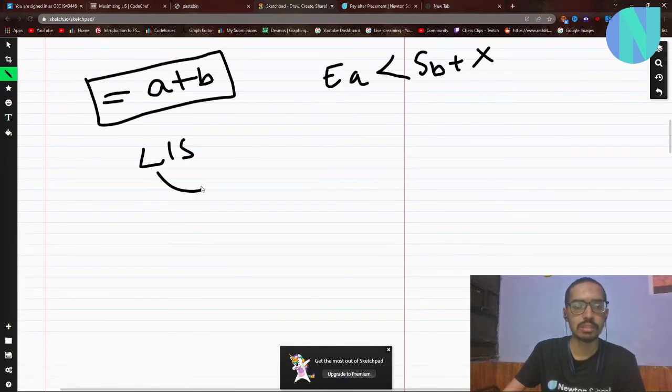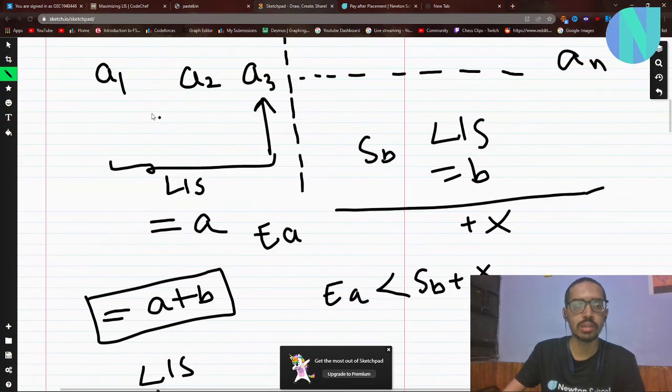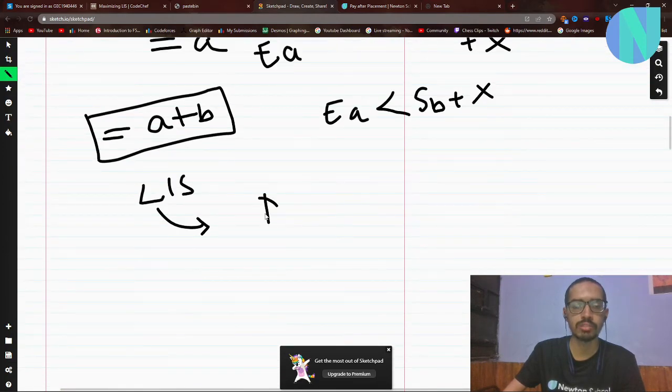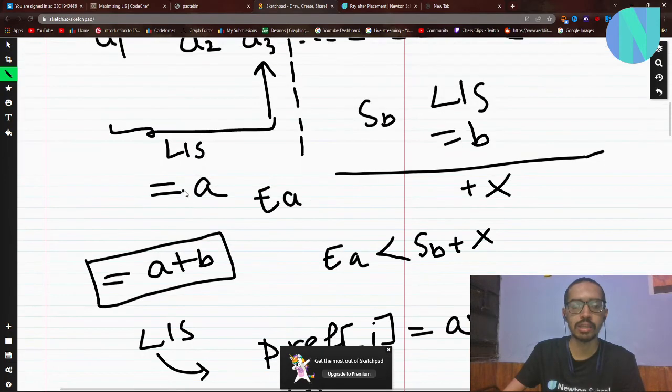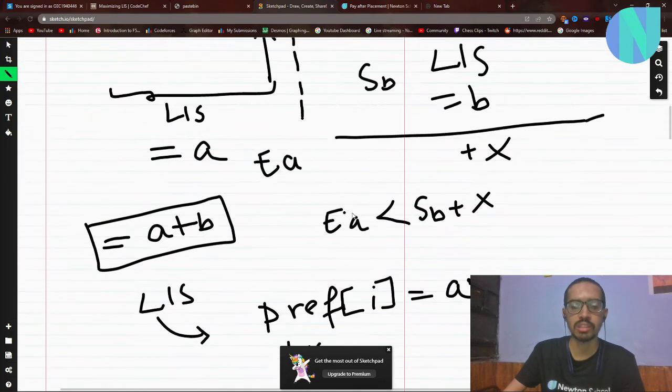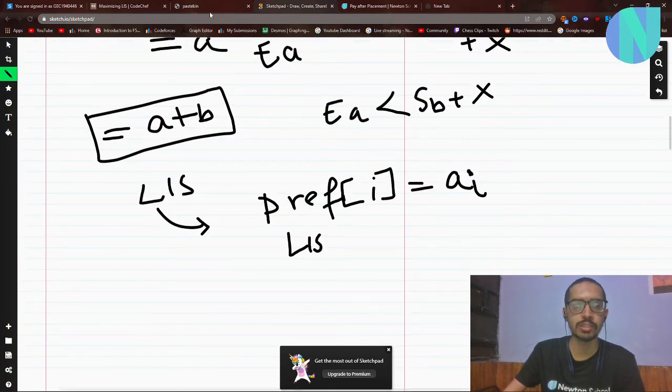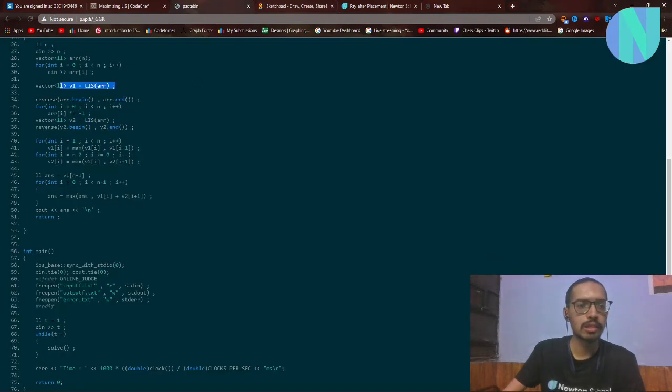What they have done is taken the array input and passed it to the LIS function. They calculated the prefix LIS for every element. This is basically a of i - like what I said 'a' here. They are calculating ai for every element.